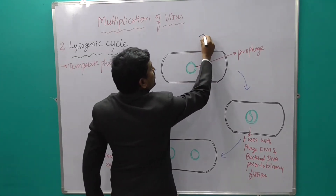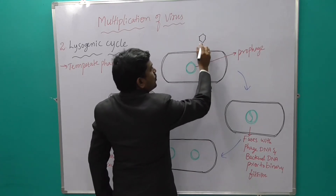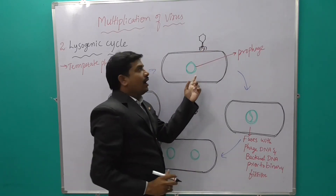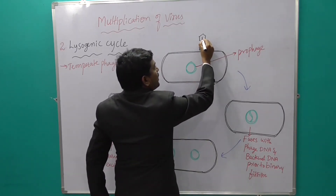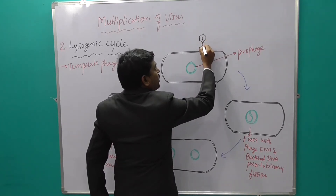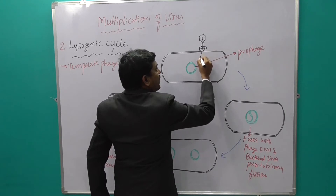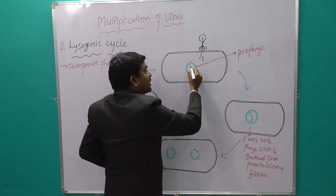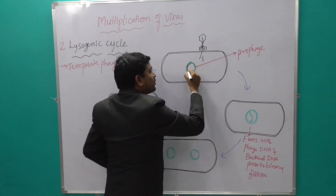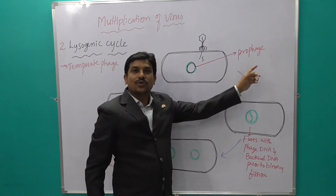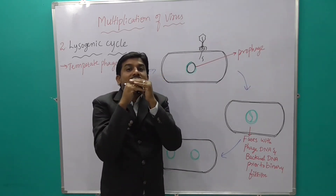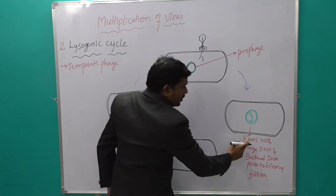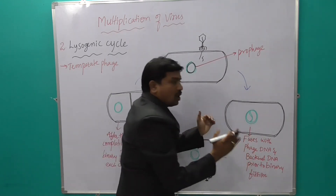When bacteriophages attack E. coli bacteria, the phage DNA passes from the head to the tail and enters within the E. coli bacteria. The phage DNA and bacterial DNA are both fused together, and this fused structure is called a prophage.